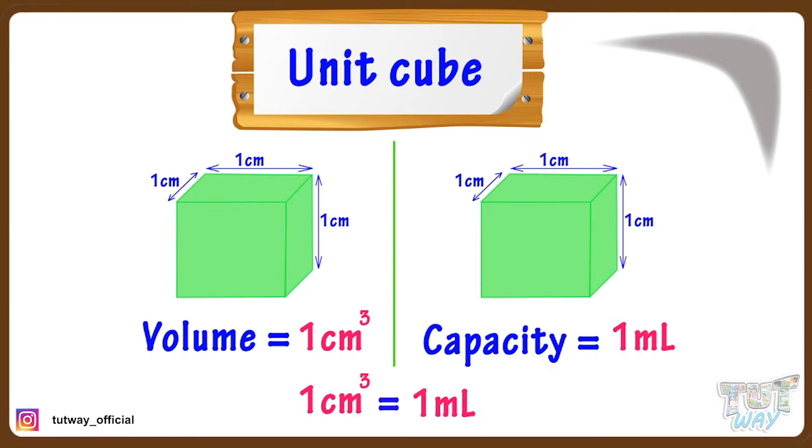So a unit cube has capacity of one milliliter and volume is one centimeter cube. So kids, now we know that volume of a unit cube is one centimeter cube.